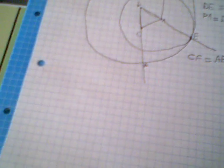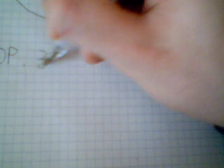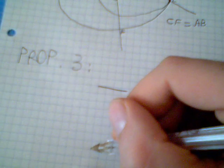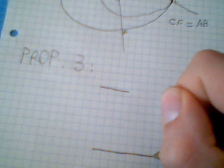The last one for now is proposition 3. It says that if I have a line and another line that is longer than the first one, I can take from the longer one a piece of line that is as long as the first line.